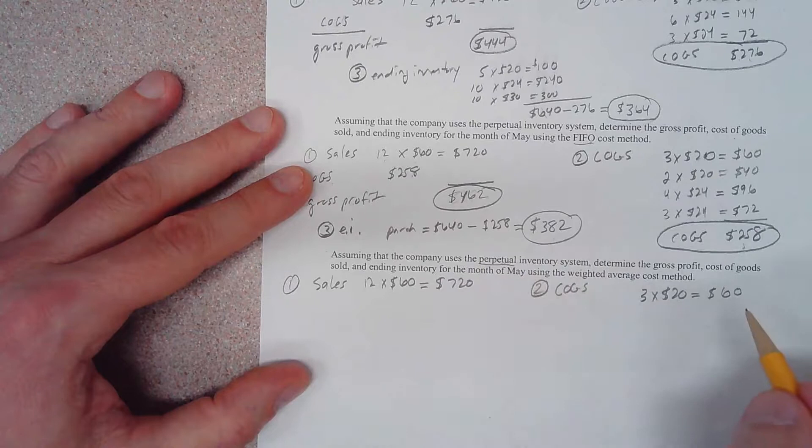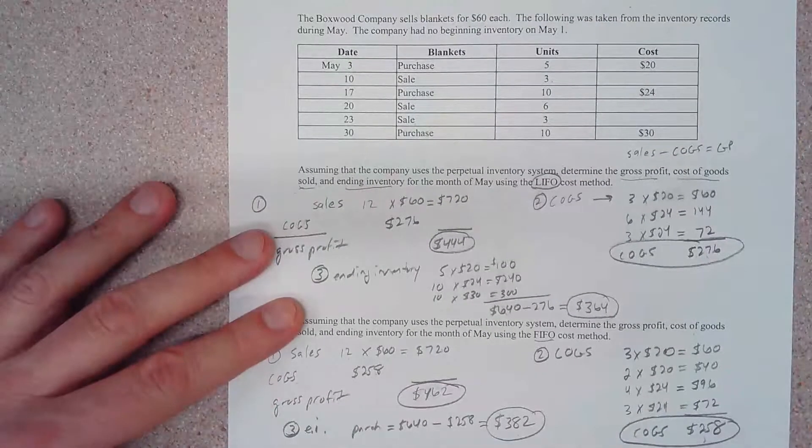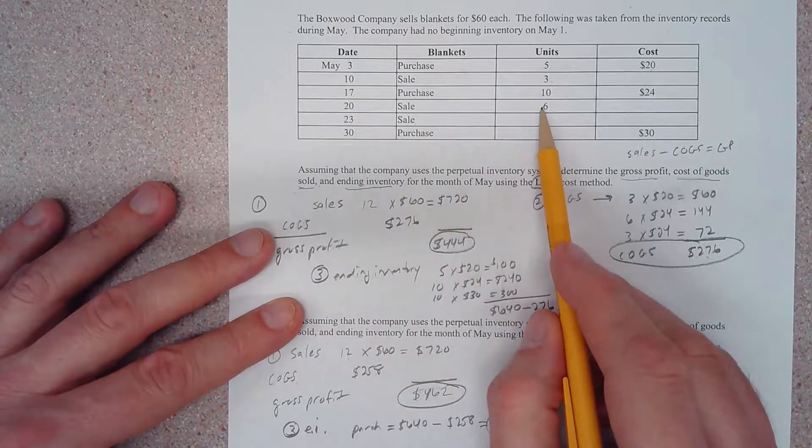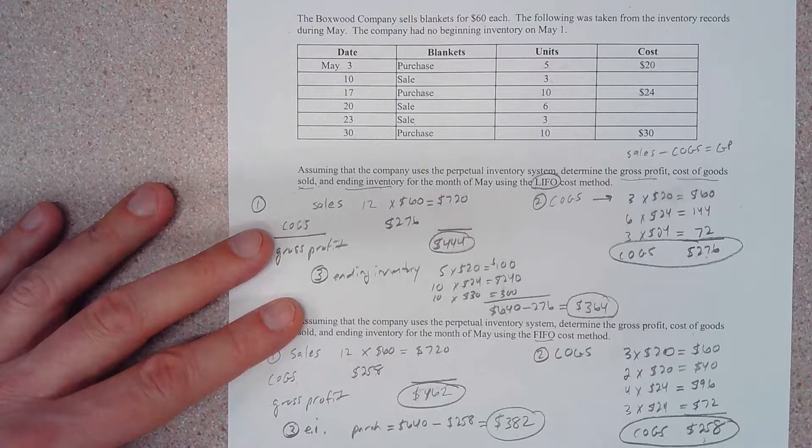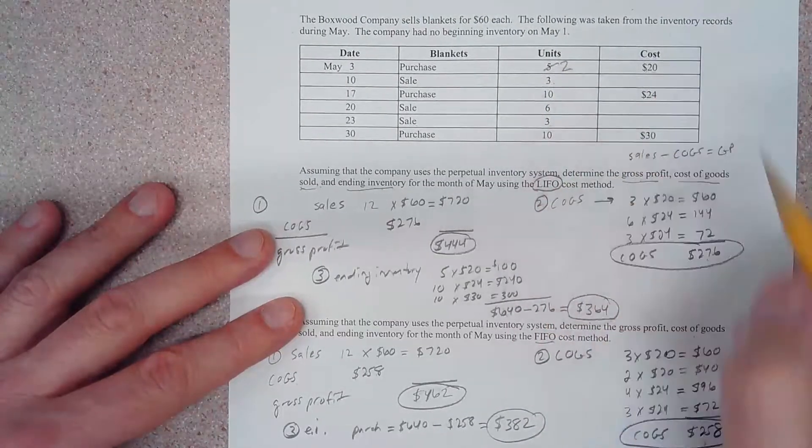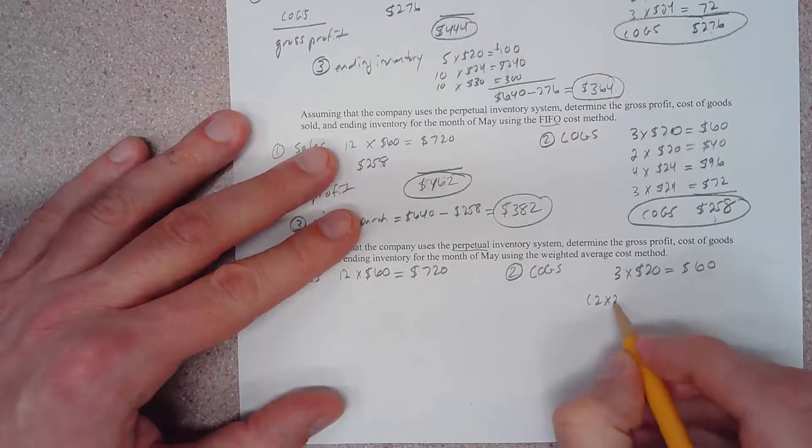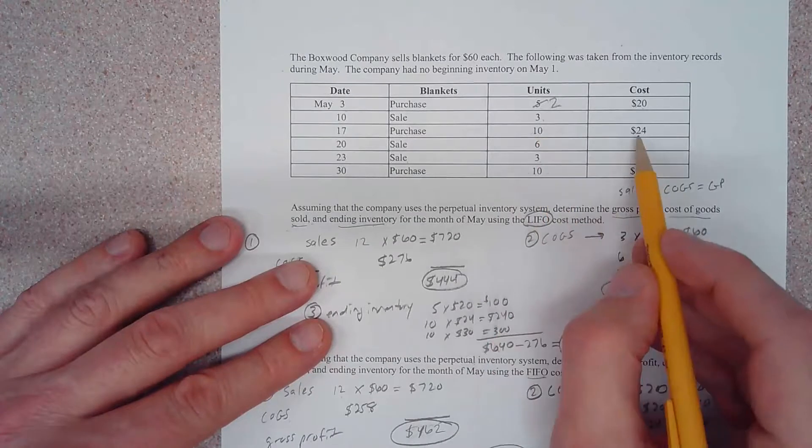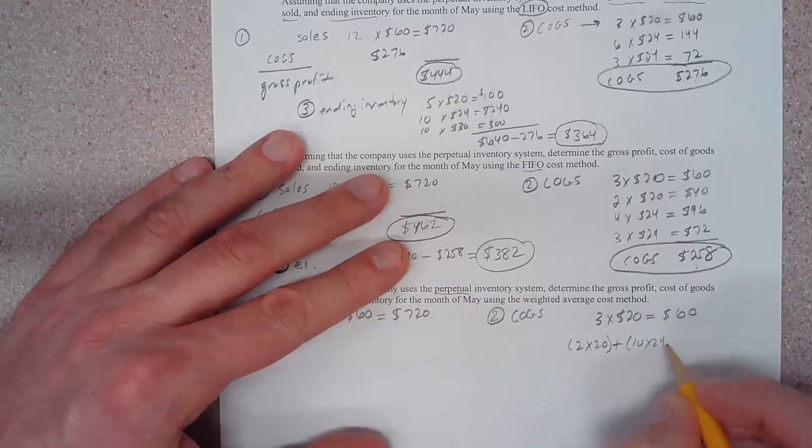Because there's no beginning inventory, this figure is the same under LIFO, FIFO, and weighted average method. However, because we're using the perpetual inventory system, after that first sale things become a little bit more complicated. Let's go back up to our scenario. On the 20th of May, we sold 6 units.